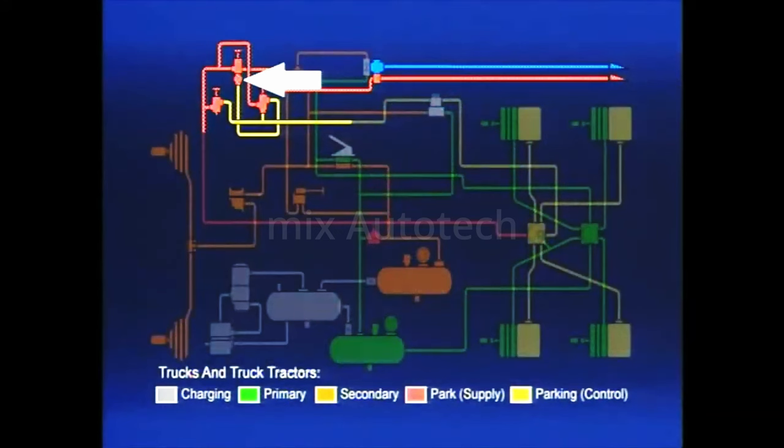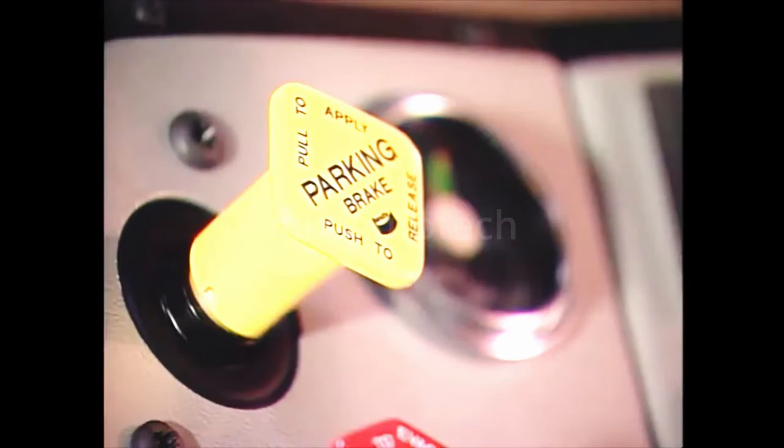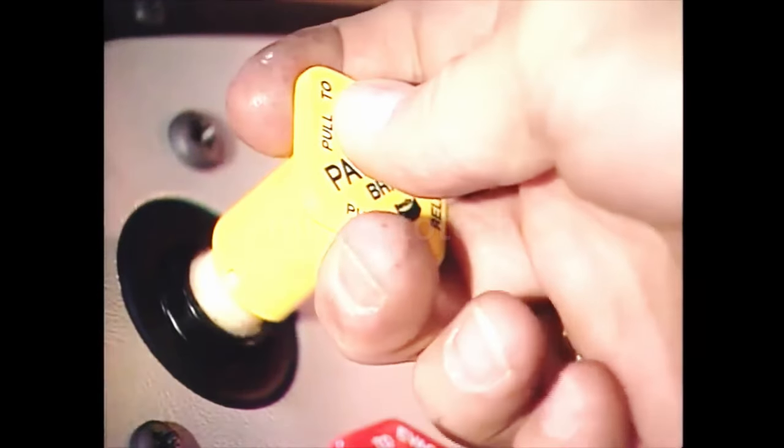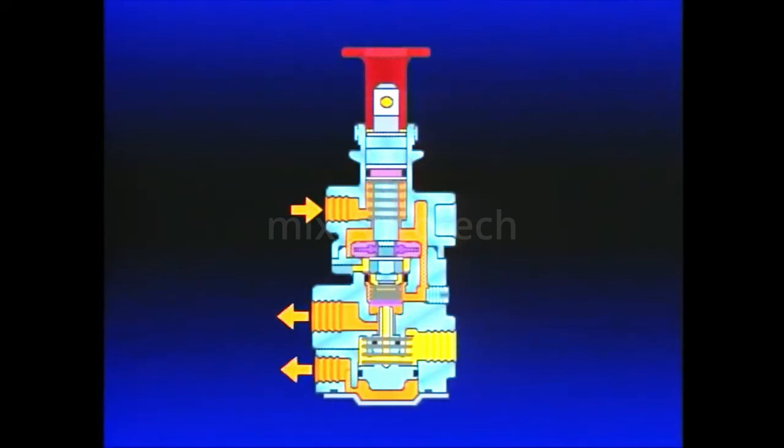Because of the synchro valve section in the PP7, the tractor protection system is linked to the tractor parking brakes. To park a tractor trailer combination, the PP1 park control is pulled out. Air is exhausted from the tractor spring brakes and from the PP7 control port.